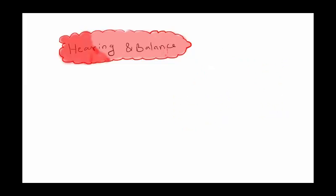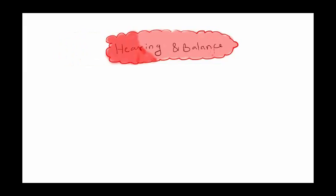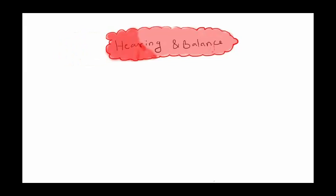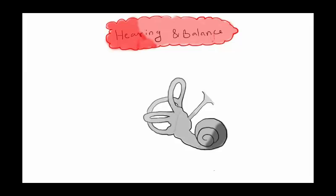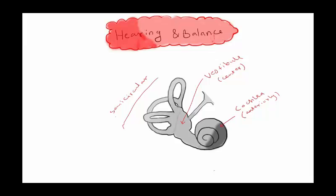We will start with the outer bony part. In the center is the vestibule. In the anterior part we have the cochlea, and posteriorly we have three semicircular canals — the anterior, the posterior, and the lateral one.